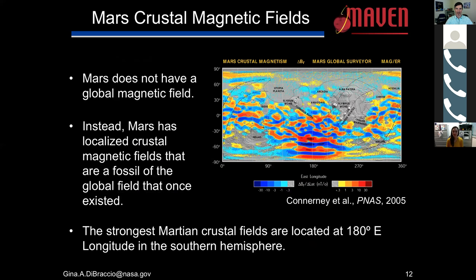Dave Brain has done a lot of work looking at how these remnant magnetic fields have either enhanced radiation reaching the surface or deflected it away — he's probably the best expert on that. He did touch on this during his webinar several months back, so folks interested can visit our website and watch Dave's whole presentation about how planetary magnetic fields affect habitability.